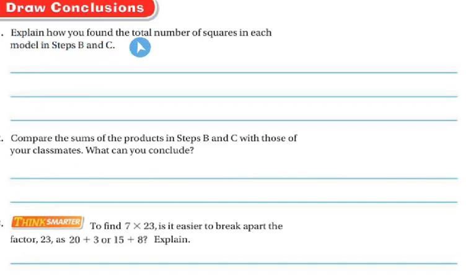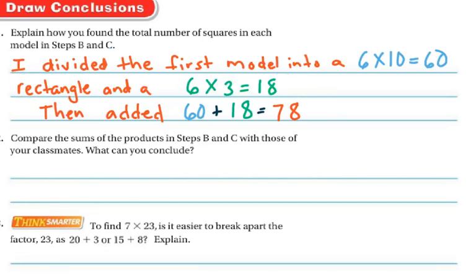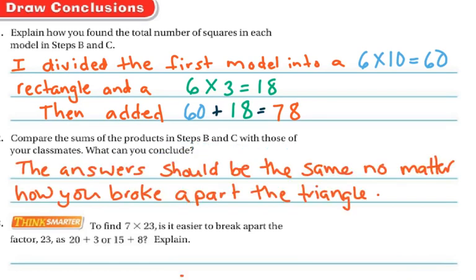Draw conclusions. Explain how you found the total number of squares in each model in steps B and C of the last problem. So I divided the first model into two rectangles, right? The first rectangle was 6 by 10, which was 60. And then the second rectangle was 6 by 3, which was 18. And then I added the 60 and the 18 and I got 78. Next, compare the sums of products in step B and C with those of your classmates. What can you conclude? You should see that the answer should be the same with your next door neighbor as long as you broke the rectangle apart. So I mean, I easily could have broke the rectangle into a 6 times 5 and a 6 times 8 because 5 plus 8 is 13. And that would have given me the 6 by 13. So as long as you're breaking it apart and you're keeping the 13 here and the 6 going this way, it doesn't matter where you decide to break it apart.